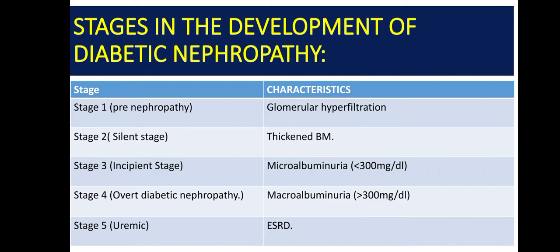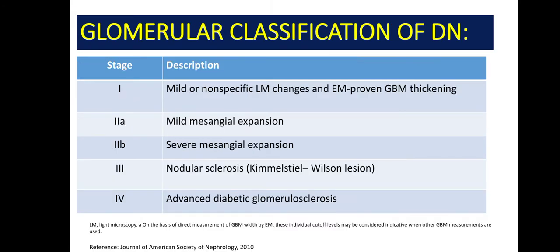Here are the stages in the development of diabetic nephropathy. Stage 1 is pre-nephropathy with glomerular hyperfiltration. Stage 2 is the silent stage with only a thickened basement membrane. Stage 3 is the incipient stage with microalbuminuria — less than 300 mg/dL of albumin in the urine. Stage 4 is overt diabetic nephropathy with macroalbuminuria — more than 300 mg/dL of albumin in the urine. And stage 5 is uremic, that is, end-stage renal disease.